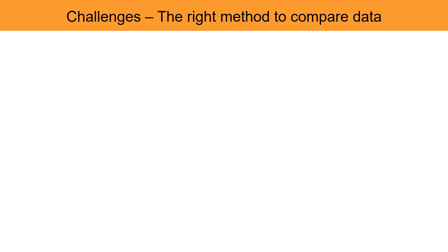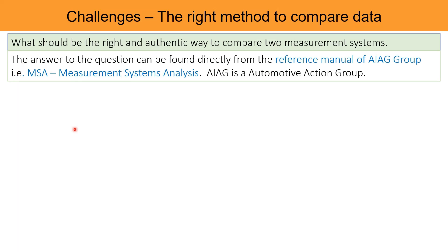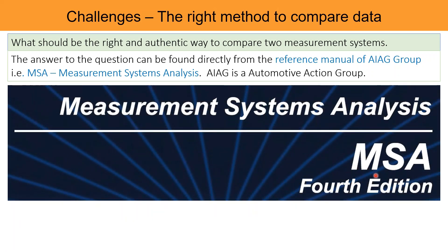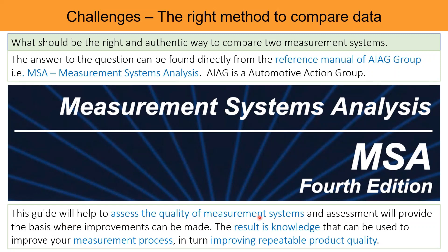What should be the right and authentic way to compare two measurement systems? The answer is found directly from the reference manual of the AIAG group — MSA, Measurement Systems Analysis. AIAG is an Automotive Industry Action Group. This guide helps assess the quality of a measurement system, and this assessment provides the basis for improvement. The result is knowledge that can be used to improve your measurement process and, in turn, improve repeatable product quality.